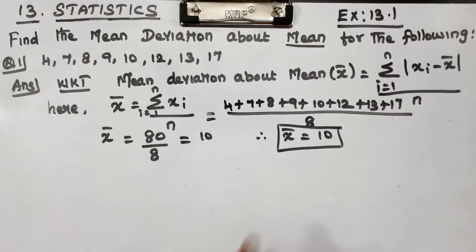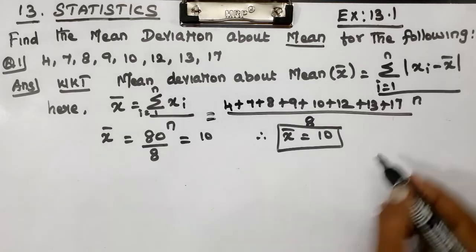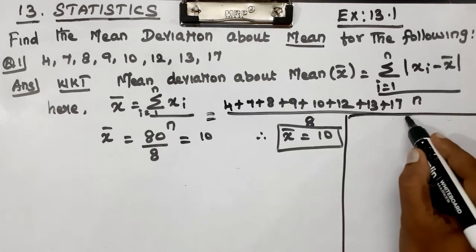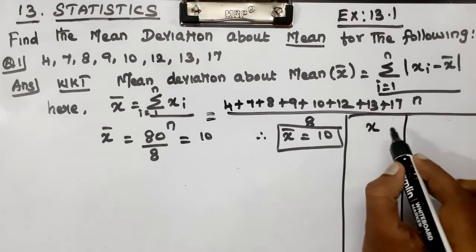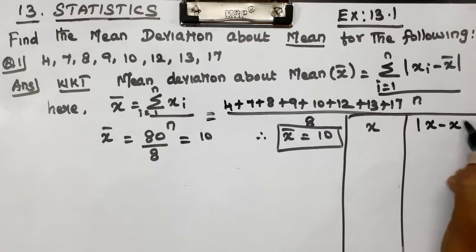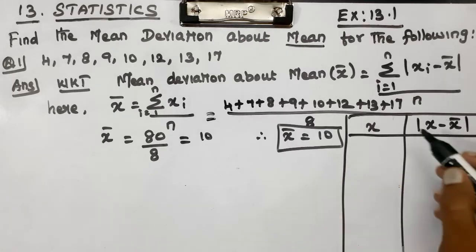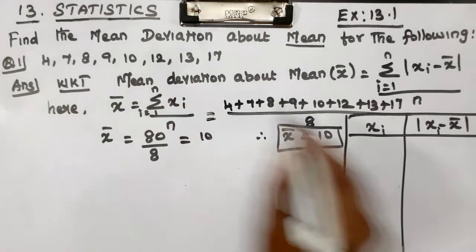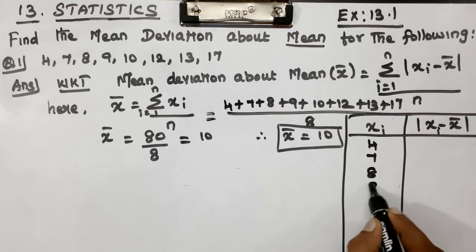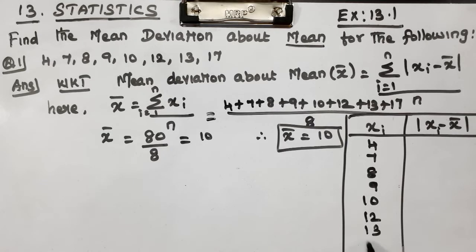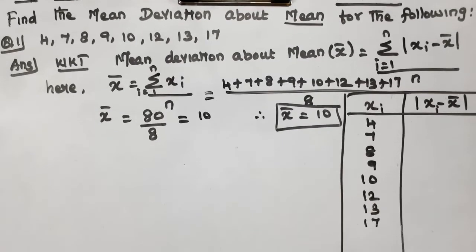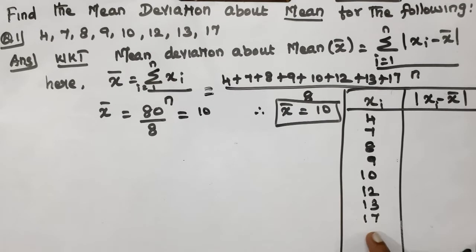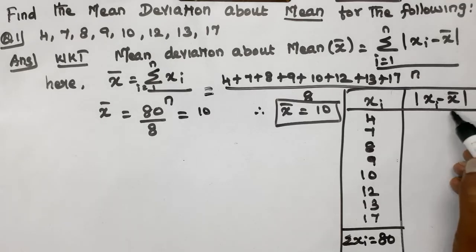Since x_bar equals 10, we now find x_i minus x_bar for each value. We set up a tabular column with columns for x_i and x_i minus x_bar.